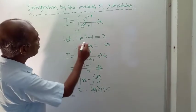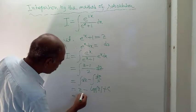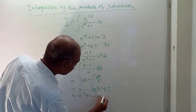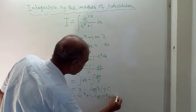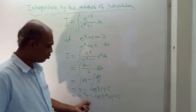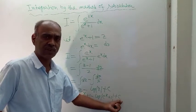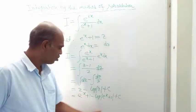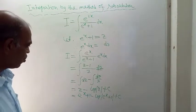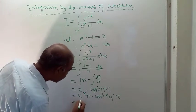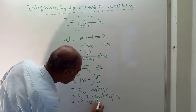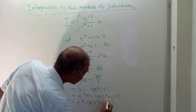Now z is equal to e to the power x plus 1. So substituting back: e to the power x plus 1 minus log of e to the power x plus 1, plus C. The constant 1 and C together make one single constant, written as C1. So the final result is e to the power x minus log of e to the power x plus 1, plus C1.